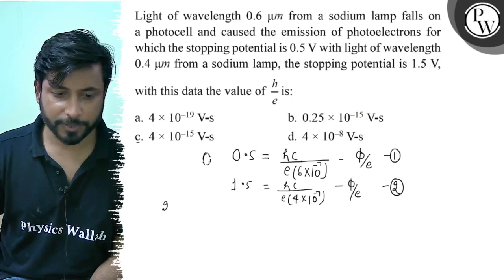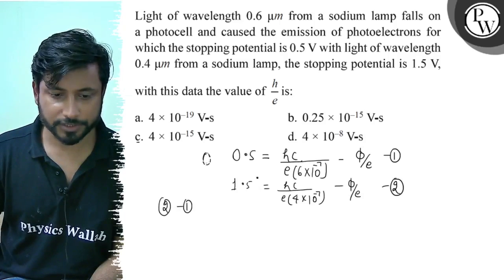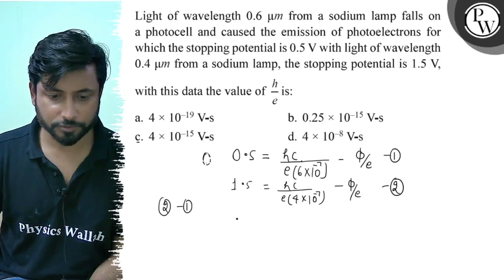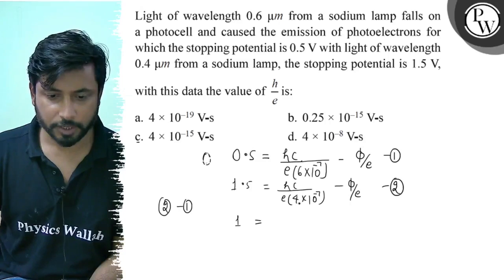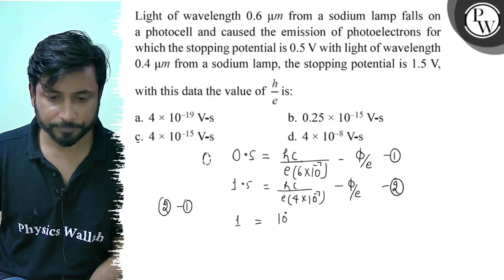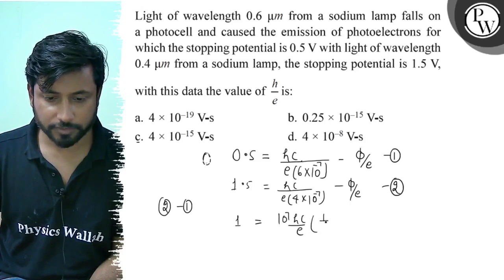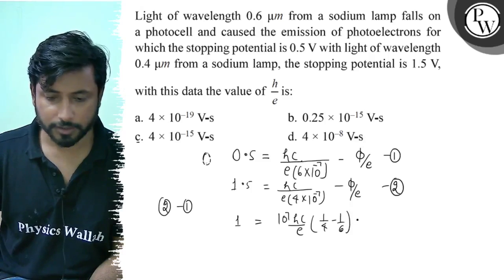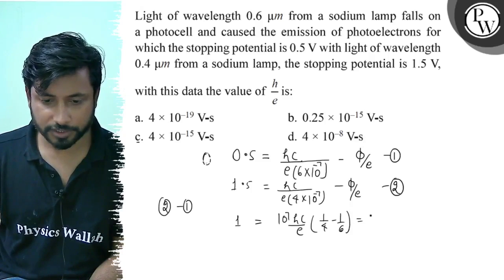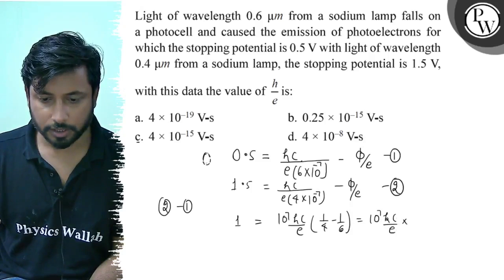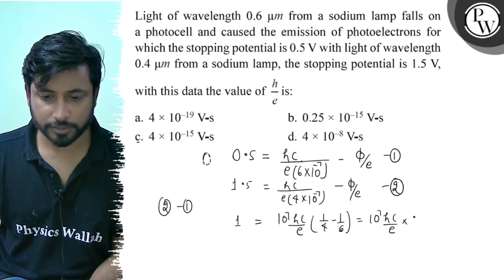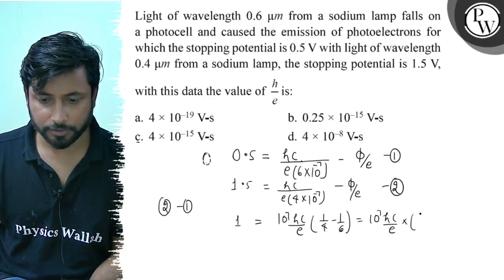Equation 2 minus equation 1. This is 1.5 minus 0.5, 1 equals to hc by e times 1 over 0.4 into 10 to the power minus 6 minus 1 over 0.6 into 10 to the power minus 6. This is 6 minus 4, 2 by 24, so 1 by 12.